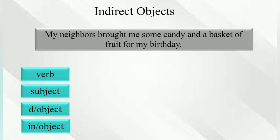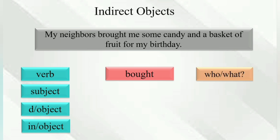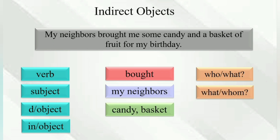'My neighbors brought me some candy and a basket of fruit for my birthday.' Verb: brought. Who brought? My neighbor. My neighbor brought what? Candy and a basket. For whom? For me. So 'me' is the indirect object.